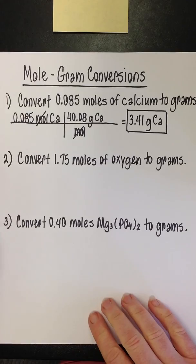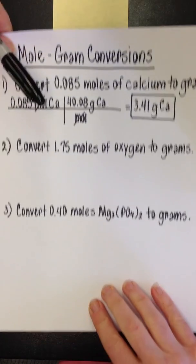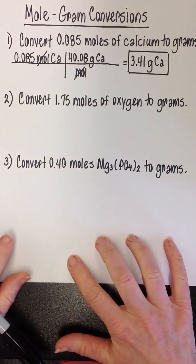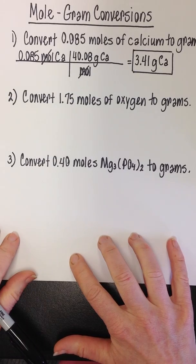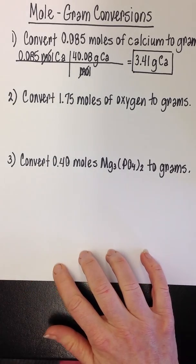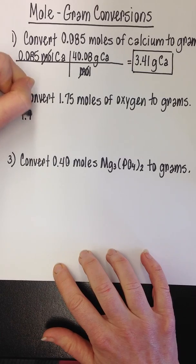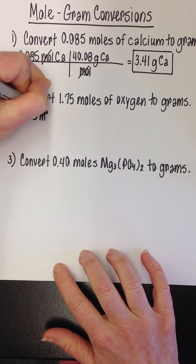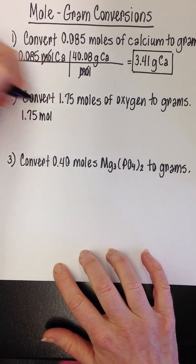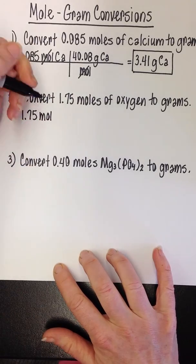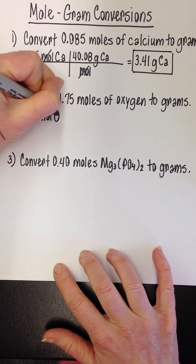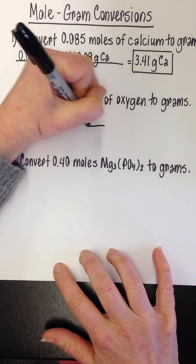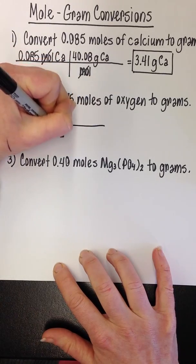Let's look at the next one. Convert 1.75 moles of oxygen to grams. So we're going to write down our given 1.75 moles. And again, M-O-L is the abbreviation you're going to use. Oxygen is just an O. So long line, short line.